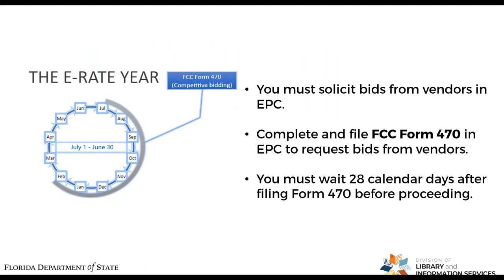The FCC Form 470 is the actual mechanism for requesting bids for services. It must be filed in EPC. Once you've filed it, you must wait 28 calendar days — four weeks — after filing before you can proceed with signing a contract or filing for the next portion of the E-Rate process. That can trip some people up, especially when timing starts to come into play.